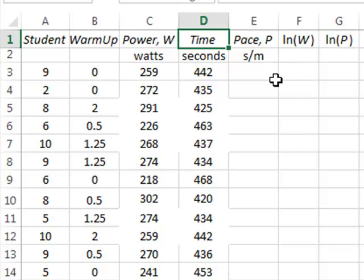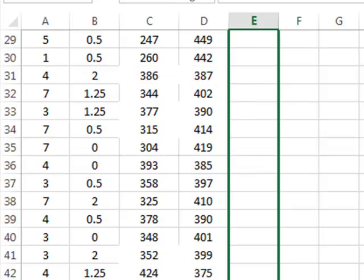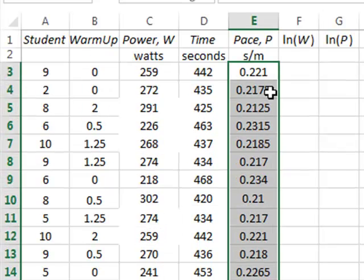We will first derive a new variable, pace P, which will be the time taken to travel 1 meter. So in cell E3, we enter an equation for the time in D3 divided by the distance in meters, which was 2000, which gives the average time in seconds to cover each meter. Then we copy that equation down for all the records, giving the pace for each particular student.